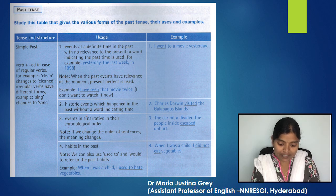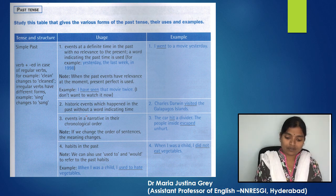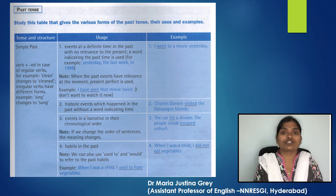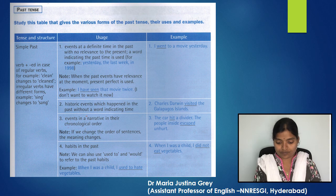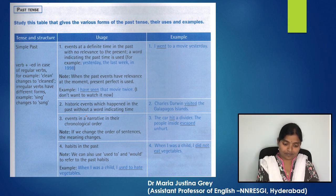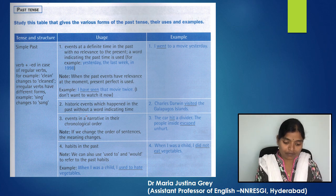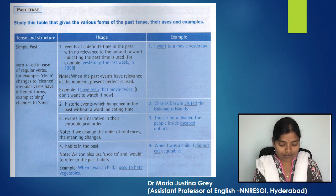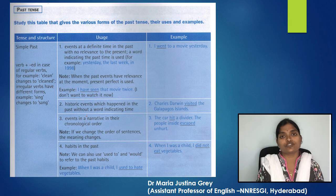Note: when past events have relevance at the moment, present perfect is used. For example, 'I have seen that movie twice' — that means I don't want to watch it now. An example of simple past: 'I went to a movie yesterday.' To form simple past, we add -ed to a verb in the case of regular verbs — for example, 'clean' changes to 'cleaned.' Irregular verbs have different forms — for example, 'sing' changes to 'sang.'